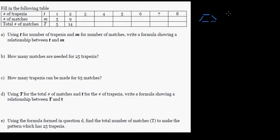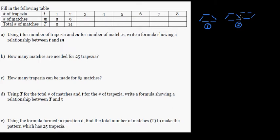If you want to make the second pattern, you continue: one, two, three, four, five, and then six, seven, eight, nine. So adding four more gives the second pattern. In the first pattern, one trapezia gives five matches, and in the second pattern, two trapezias give nine matches.